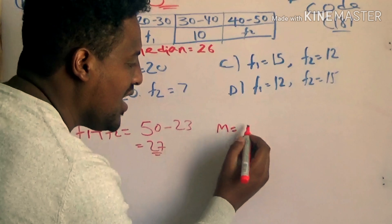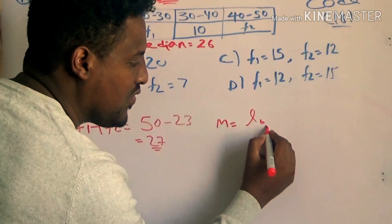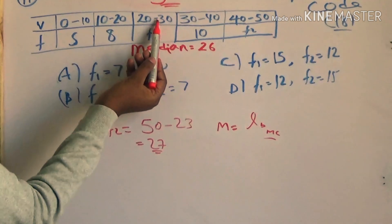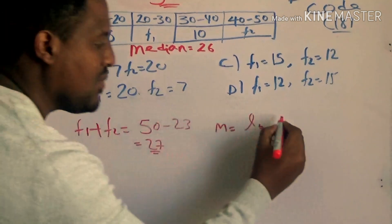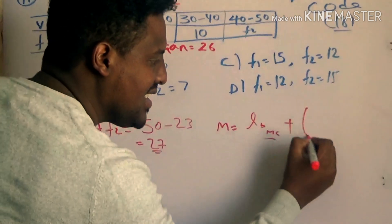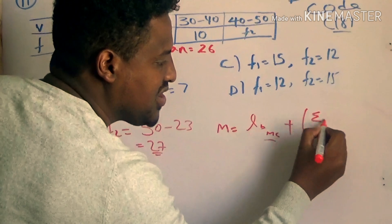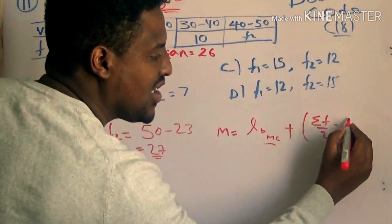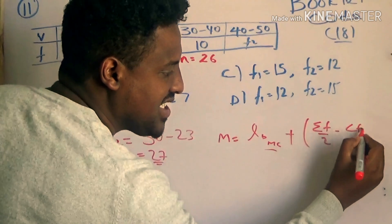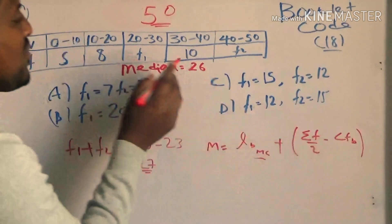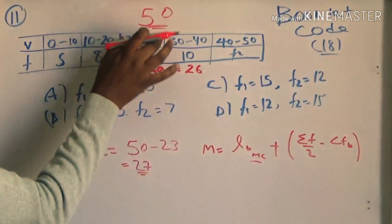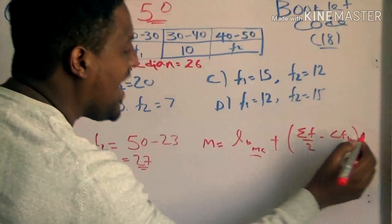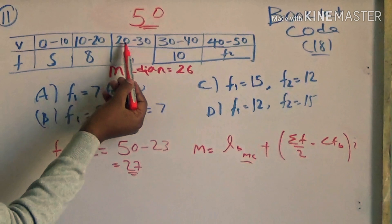The median formula: the lower bound of the median class — the median class is identified. The lower bond is given. The formula is: Median = Lower Bond + [(n/2 − cumulative frequency before the median class) divided by the frequency of the median class] times the class interval.